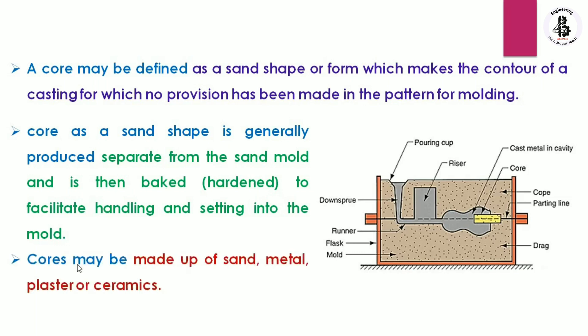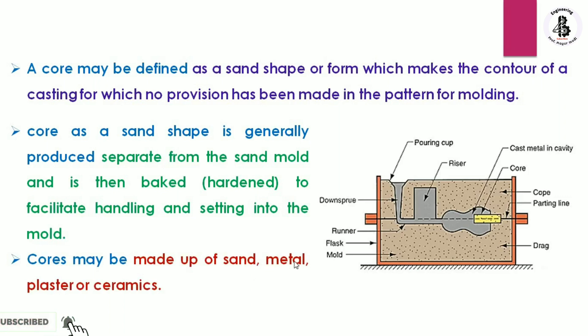Cores may be made of sand materials, and sometimes they are also made with metallic materials, plaster, or ceramic materials. But basically, cores are used to make hollow castings.